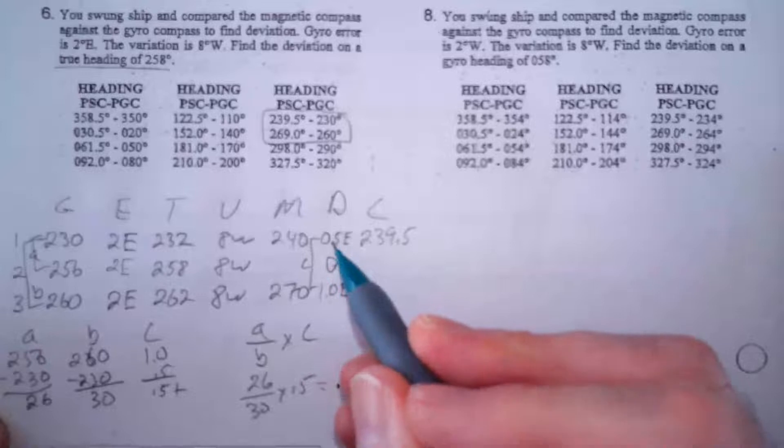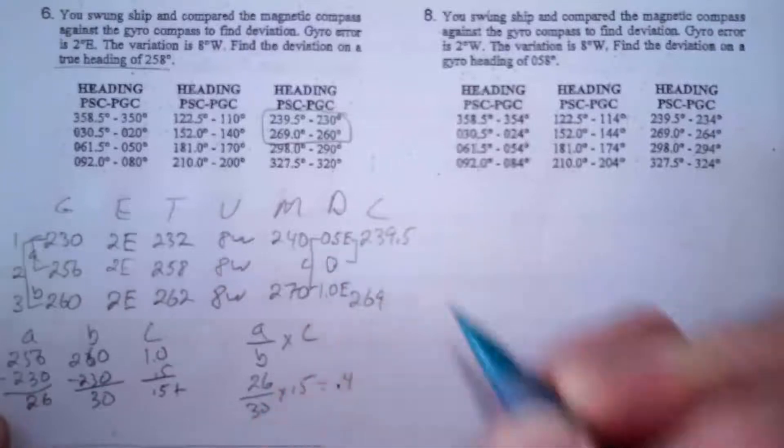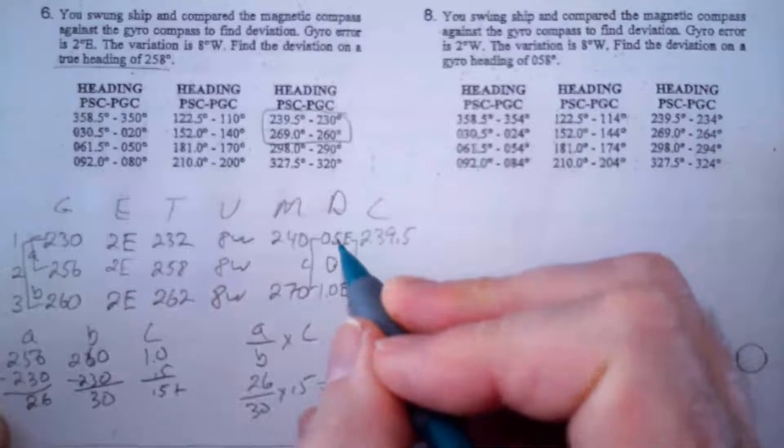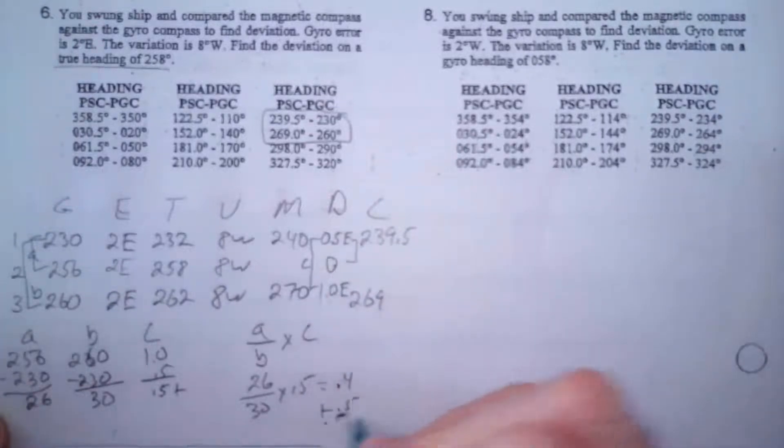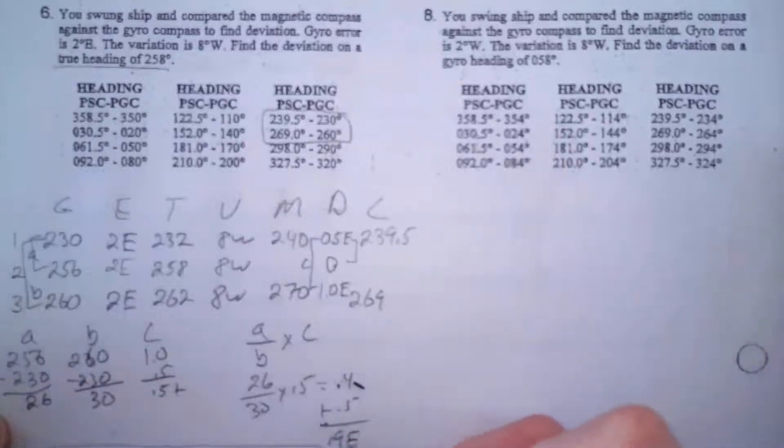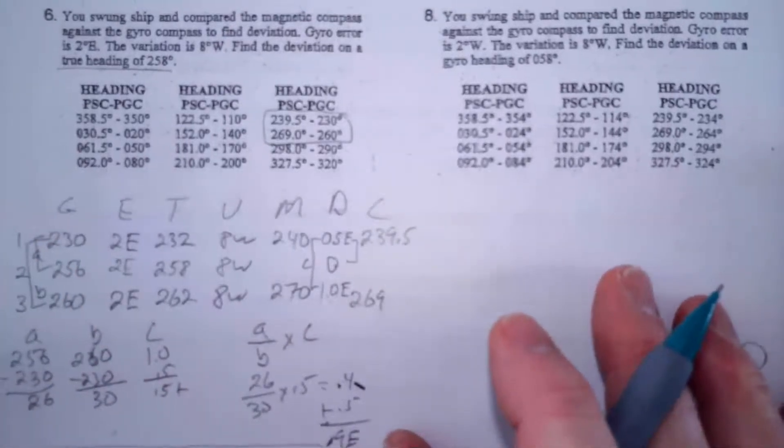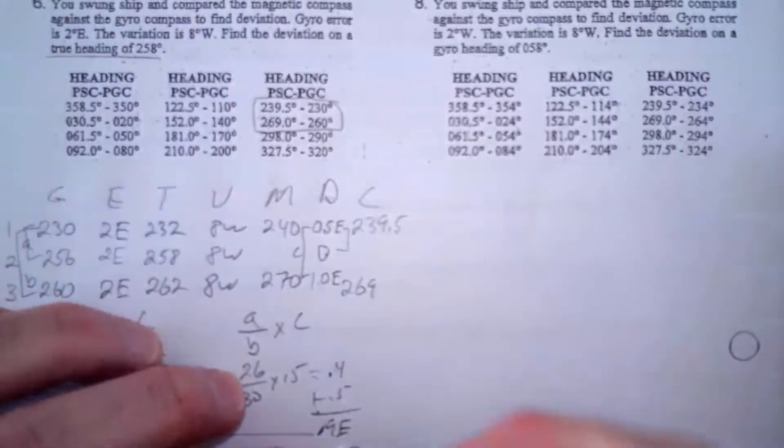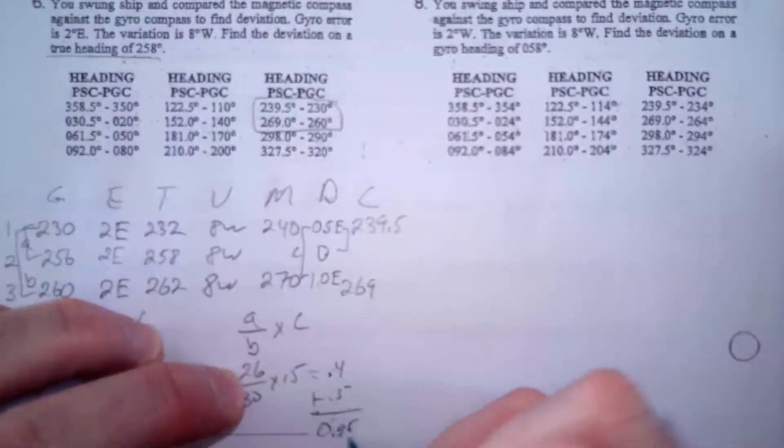So what I just calculated was this little difference here between these two, and that was 0.4. So now we're going to apply that to 0.5. And since 0.5 to 1 is getting bigger, I'm going to add 0.5 and that gives me 0.9 east. So my deviation is 0.9 east.